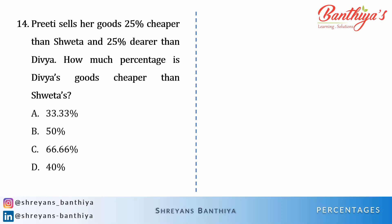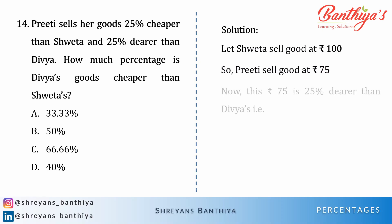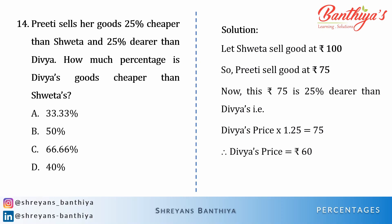Please try to solve this question. If you haven't reached the answer, let's see the solution. Let Shweta sell goods at 100 rupees — so Priti sells those goods at 75 rupees. Now this 75 is 25% dearer than Divya, so Divya's price × 1.25 = 75, which means Divya's price is 60. Now comparing Divya and Shweta: Shweta is 100 and Divya is 60, so the required percentage is 40%. Assuming 100 when no numbers are given is the best practice for this chapter.